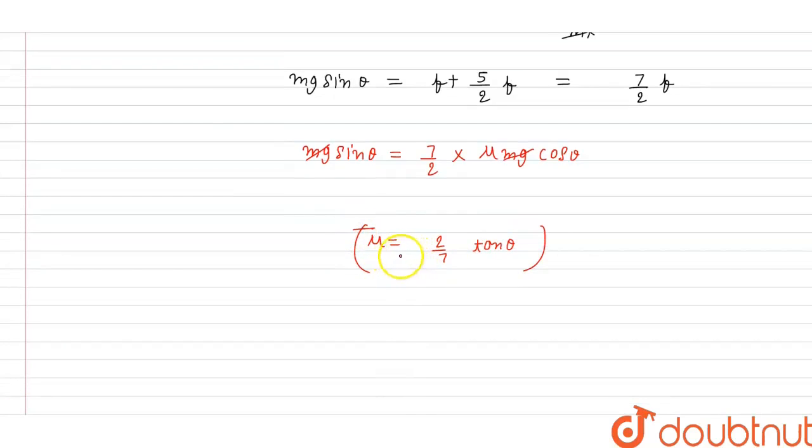This is the minimum coefficient of friction. So it should be mu is greater than or equal to 2 by 7 tan theta. This is the required condition.